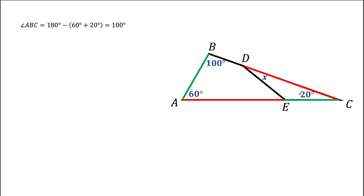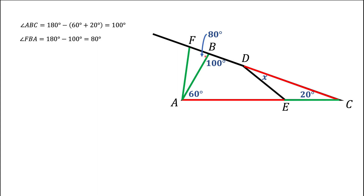One thing we can do is to extend the side BC. Then we'll build another green segment that starts at point A and ends at this BC line — call it AF. So now we get FAB as an isosceles triangle. Let's think about angles first. If this angle is 100 degrees, the angle right here has to be 180 minus 100, so it should be 80 degrees. Since this triangle is isosceles, angles at the base should be congruent, which means angle F is 80 degrees as well.